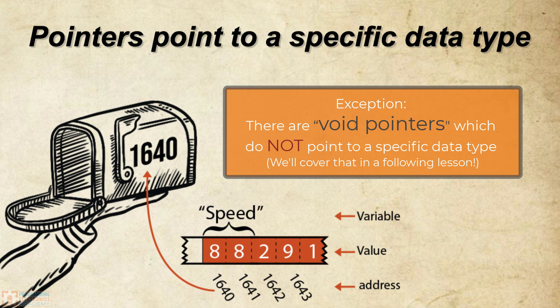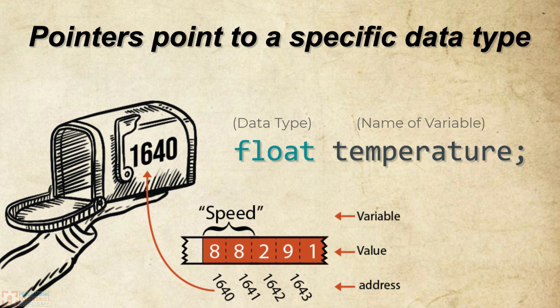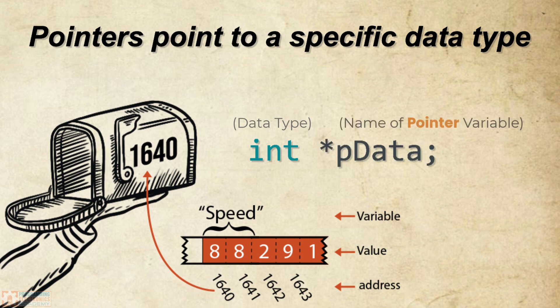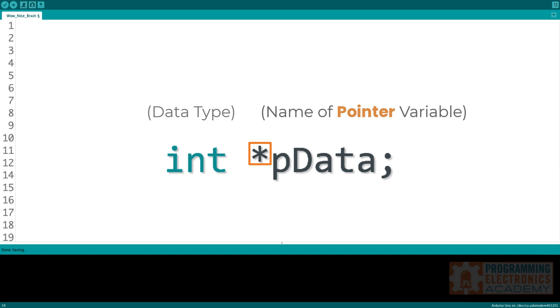Declaring a pointer is super similar to declaring any other variable. If I wanted to declare a float variable, I need the data type and the name of the variable, like float temperature, right? So now I got a variable called temperature and it's going to hold a float value. If I want to declare a pointer, I need the data type the pointer variable will point to, the name of the pointer variable, and an asterisk right before the name. So here we have a pointer, pdata, that will point to an integer variable.